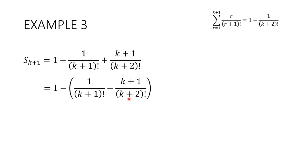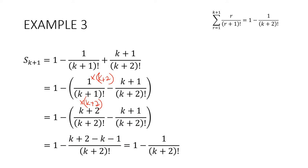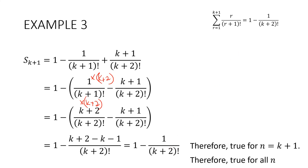I can see k plus 2 factorial here but not here. Since k plus 2 factorial equals k plus 2 times k plus 1 factorial, I just need to multiply by k plus 2. So I multiply top and bottom by k plus 2. That creates a k plus 2 factorial on the denominator. Collecting those two terms together gives k plus 2 minus k minus 1, which tidies up to 1. So we've done it — it is true for n equals k plus 1, and therefore it is true for all n.